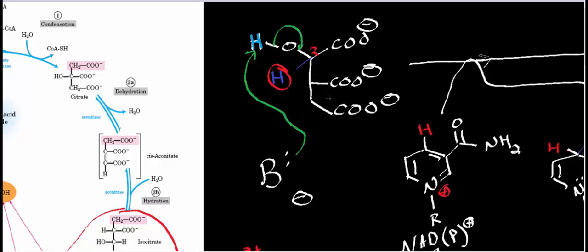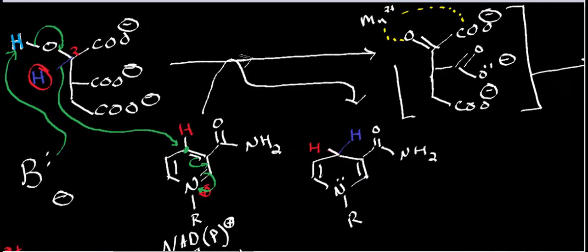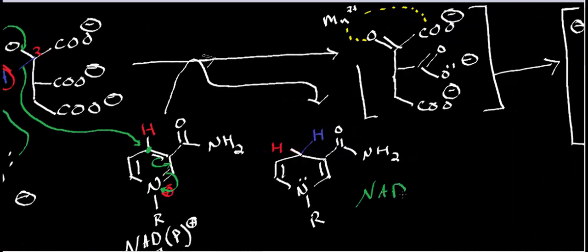In the active site of these dehydrogenases, the hydride is positioned very close to a specific carbon. When the carbonyl bond forms, it ejects the leaving group, and the hydride attacks that carbon, forcing a double bond rearrangement. This bond ends up as a lone pair on the nitrogen of the pyridine ring of NAD, which is now NADH or NADPH.